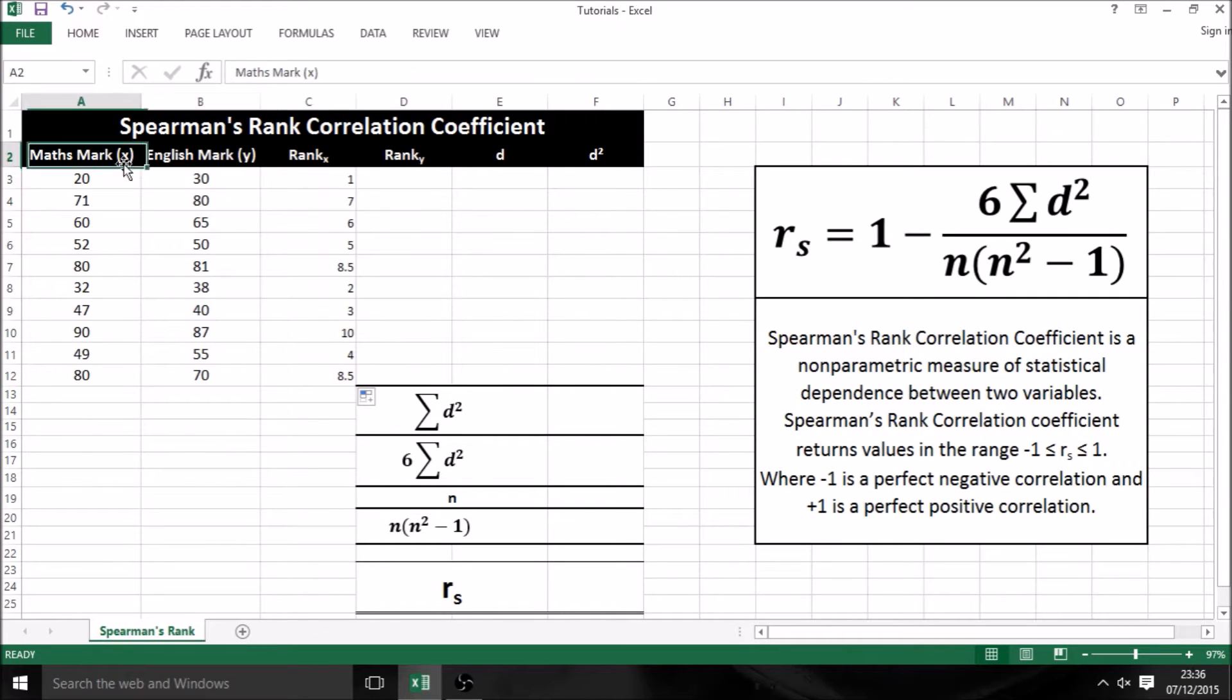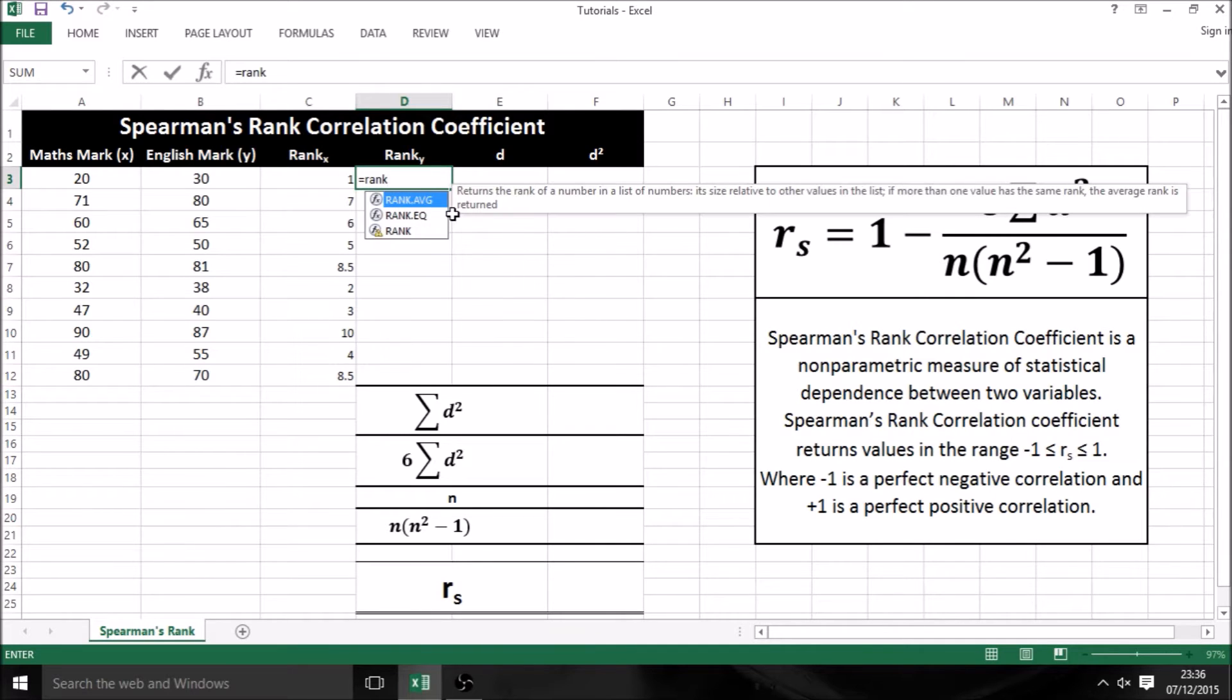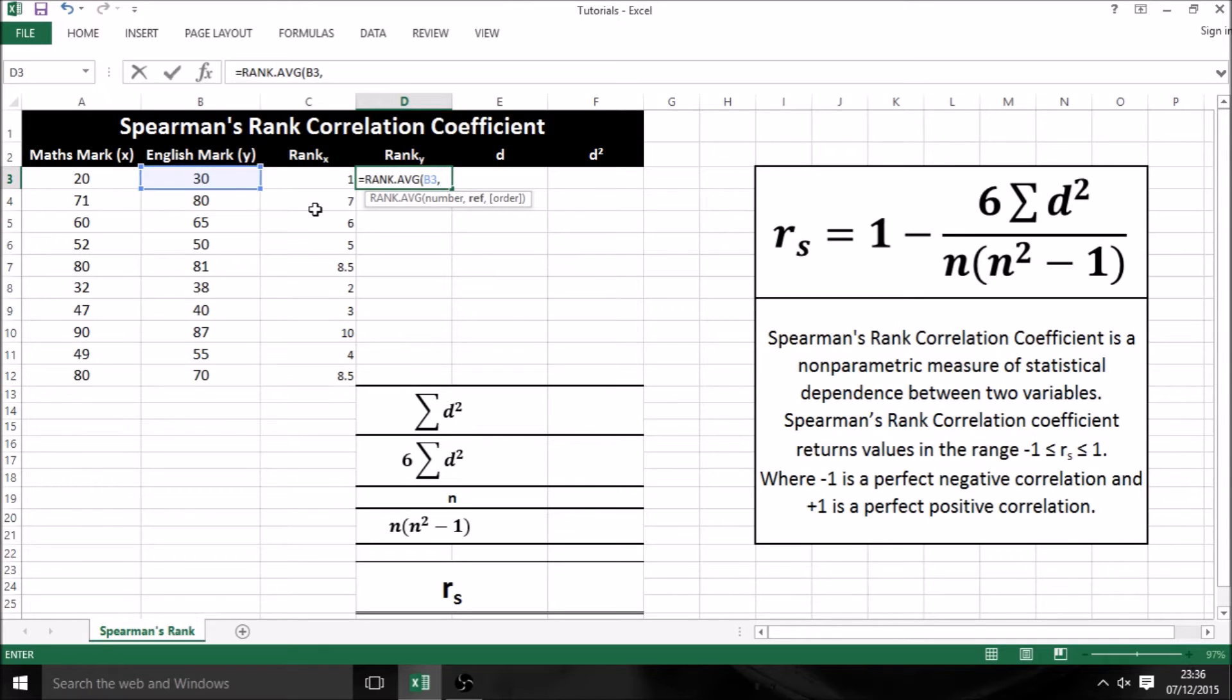Next, I'm going to do our English marks, or our y values, and it's the same thing. Just do equals rank.avg, press tab, select your first value, press a comma, then select your whole range and use F4 for absolute cell referencing, type in a comma, then add a 1 and close your brackets, then use autofill to do the rest of your y values.